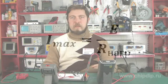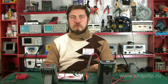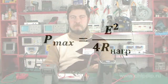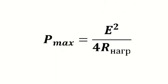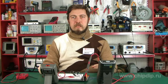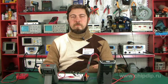Power matching is used for reaching the maximum permissible power in the load. This power equals the ratio of the square of EMF to 4 times the load input resistance. In direct current circuits, the load input resistance is to equal the source output resistance.